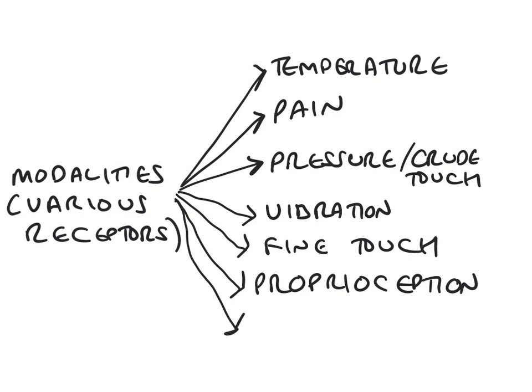So, proprioception is crucial for our appreciation of where our limbs are in space. And the final modality that I want to mention to you is two-point discrimination. Two-point discrimination is the ability to resolve two simultaneous stimuli on, for example, the skin. And the way that you can assess that clinically is, for example, to take a paper clip, to bend it into a V shape, and then you can vary the distance between the two prongs.